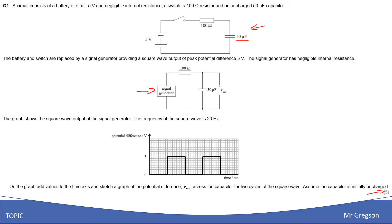What we're looking for here is your understanding that a signal generator is in this instance a very small power supply — it will be turning on and off regularly and it will create a pattern. The power supply pattern is shown on a graph, turning on and off. You're being asked to do two things: add the values for the time axis, and sketch a graph of the potential difference across the capacitor. Press pause and have a go.